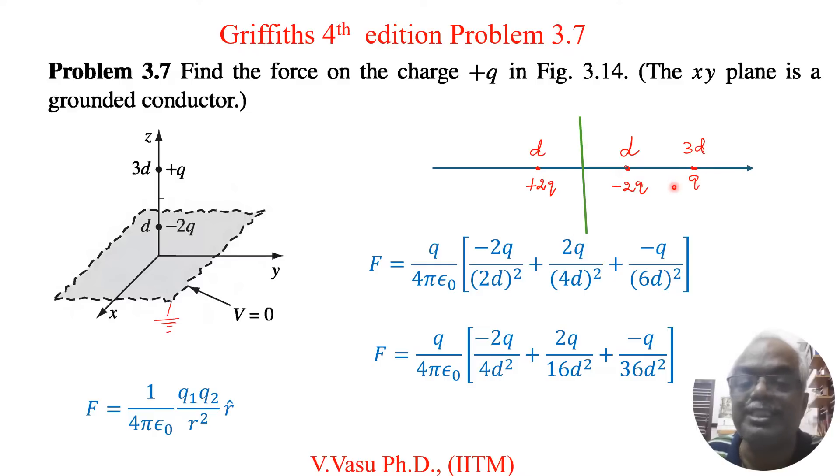And we have to compensate this, so for that you keep a charge plus Q. You keep the charge minus Q at the distance 3d in the negative axis. So this potential due to this charge is exactly cancelled by this potential due to this charge. Now we have to find the force on the charge Q. So I use this formula.